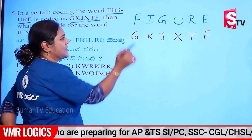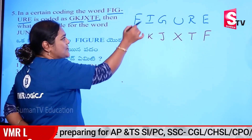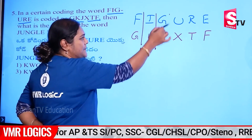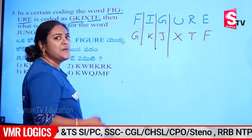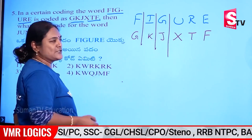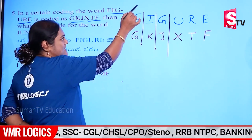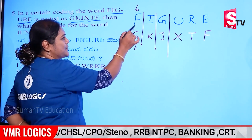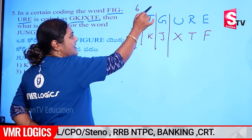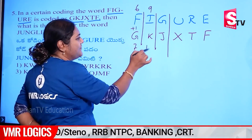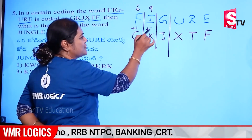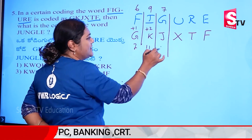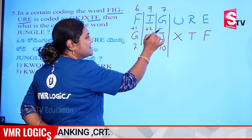Now, if we have opposites, we will tell you the place values. 6 and 7, plus 1. 9 and 11, plus 2. 7 and 10, plus 3.